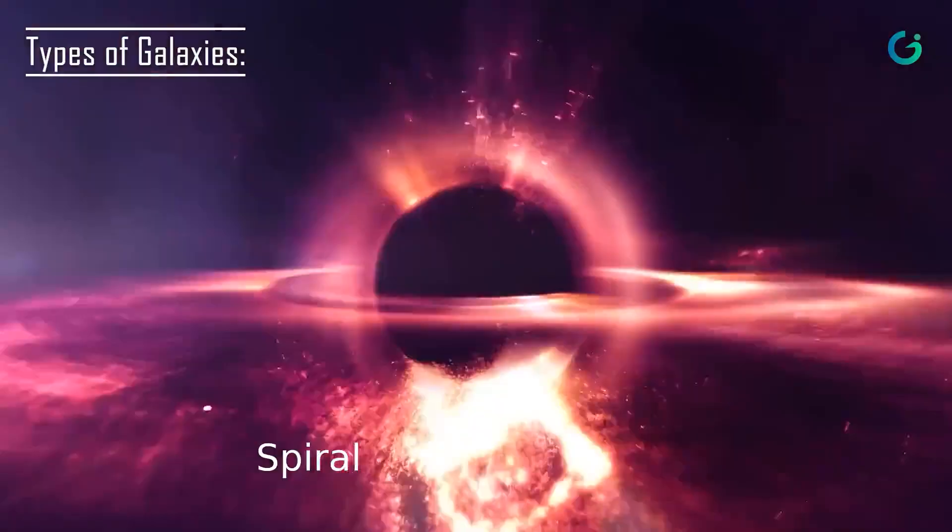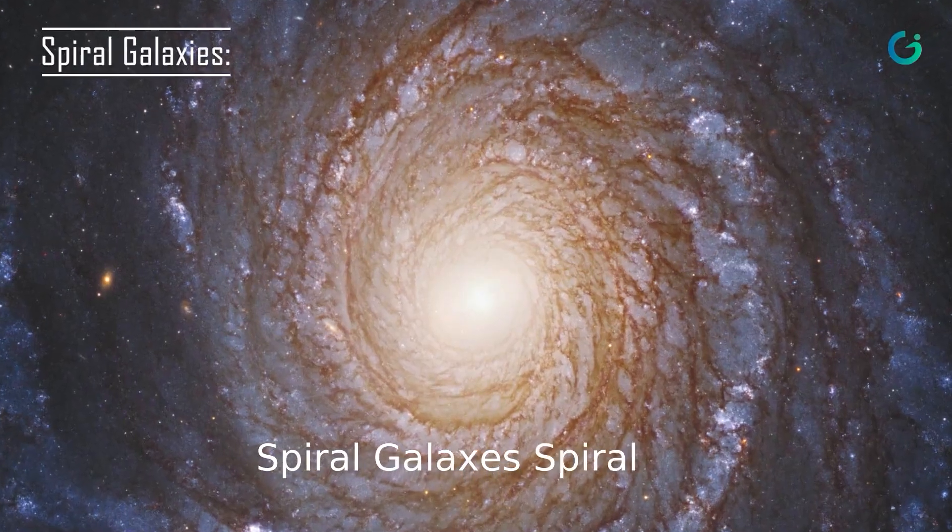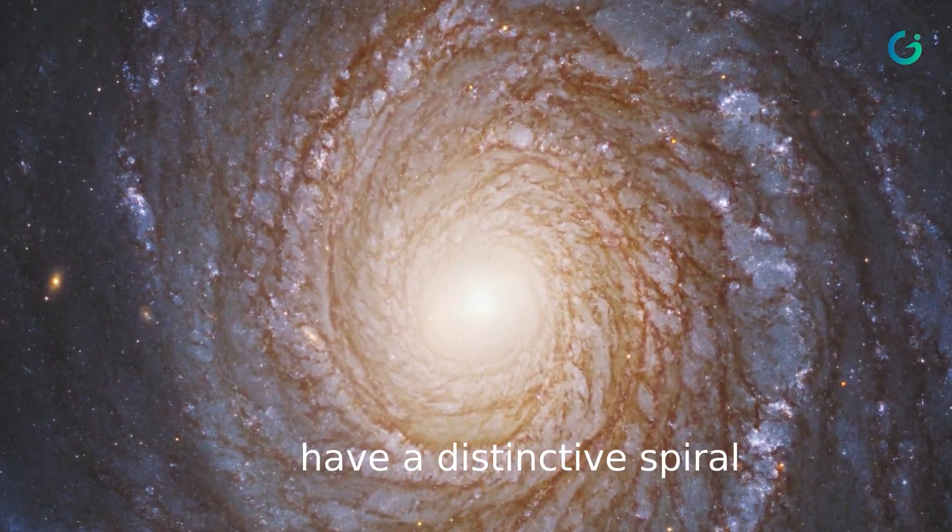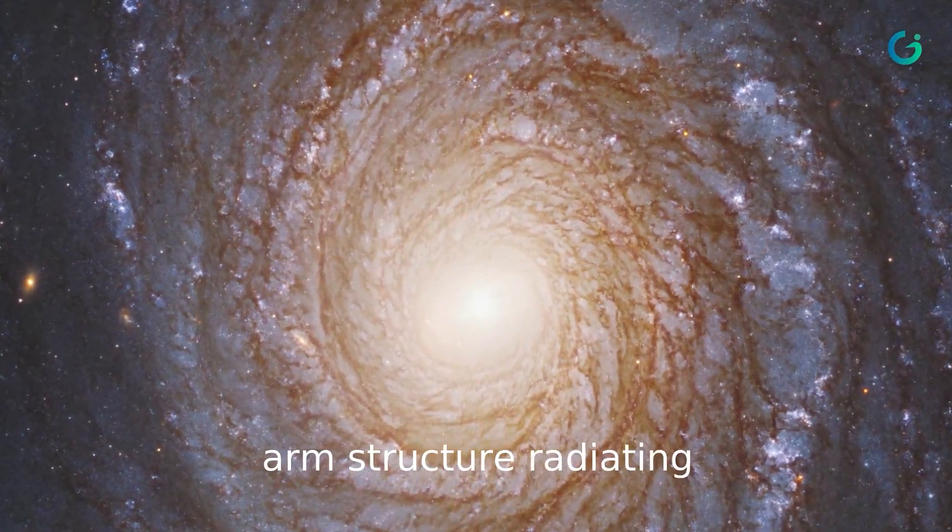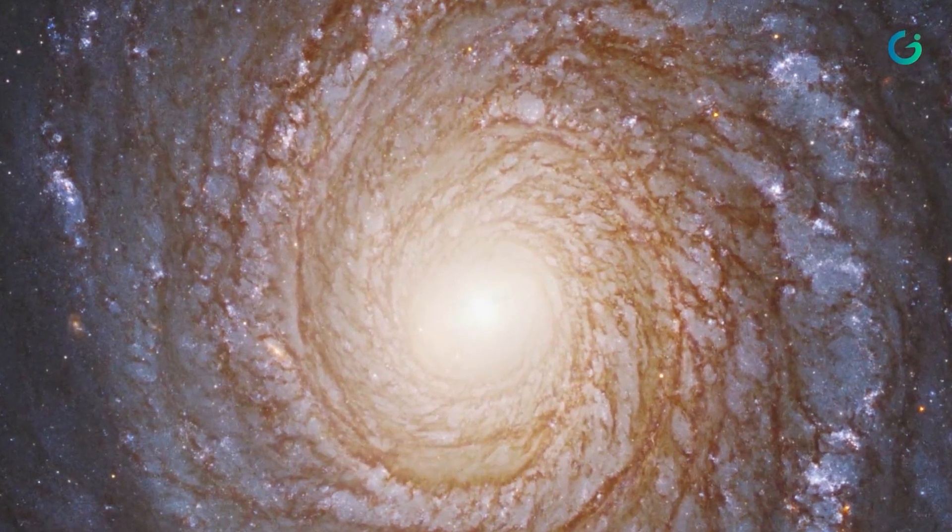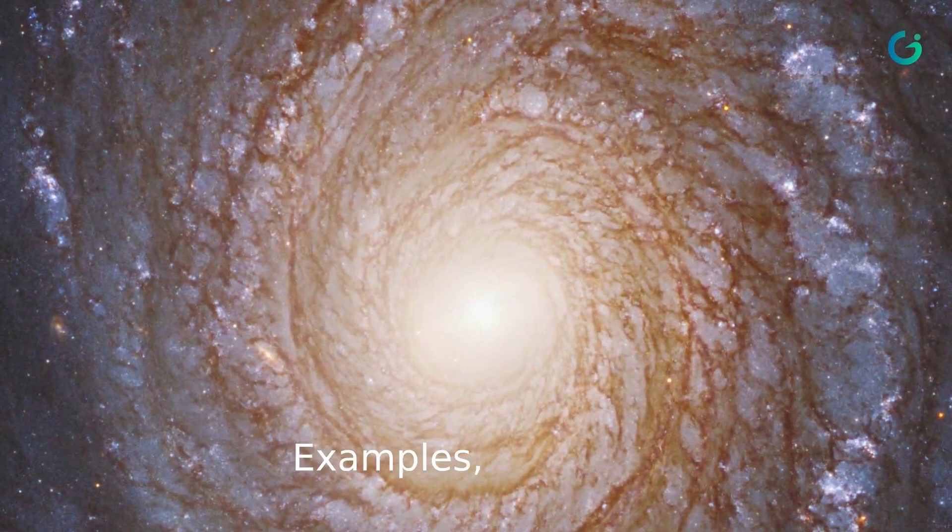Spiral galaxies have a distinctive spiral arm structure radiating from a central bulge. They often contain young, hot stars in their arms. Examples include the Milky Way and the Andromeda Galaxy.